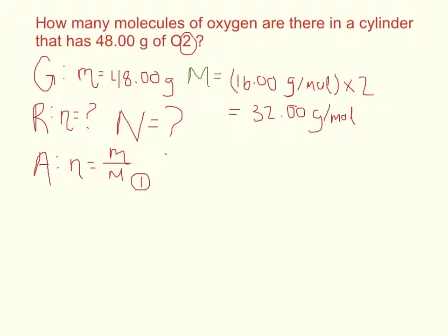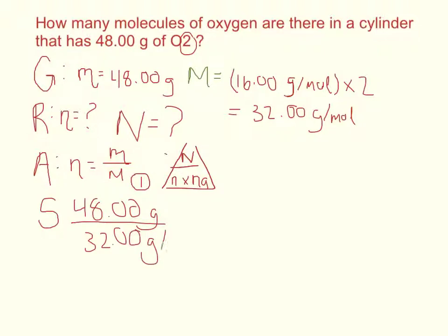And entities is moles times Avogadro's number. So moles is 48.00 grams, divided by 32.00 grams per mole. And that equals 1.5 grams per mole.